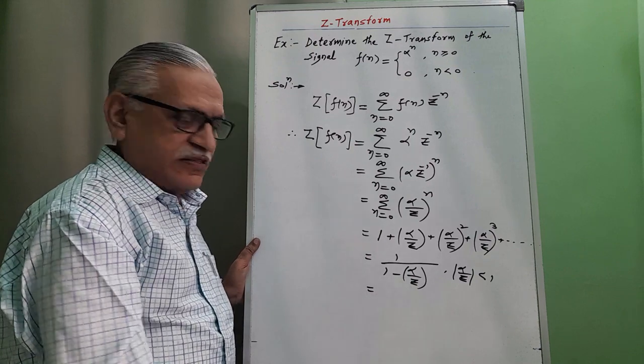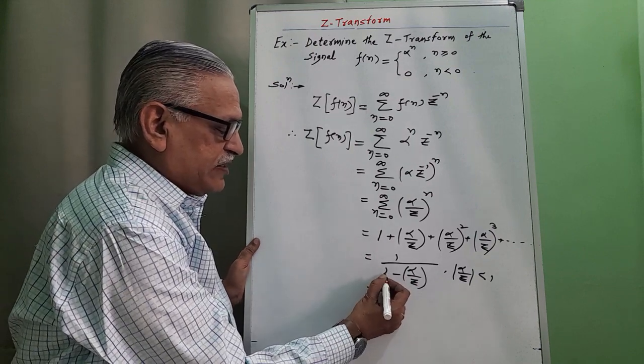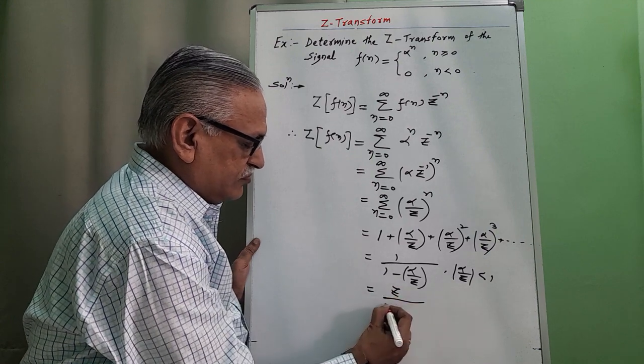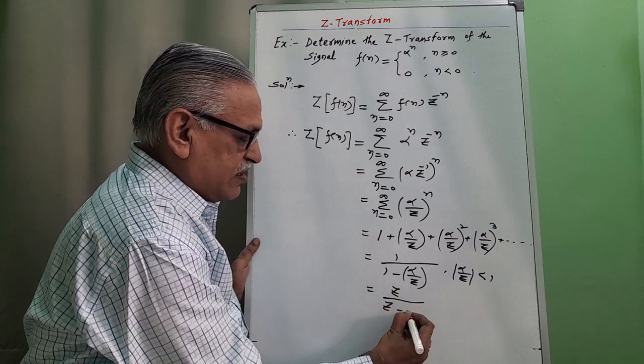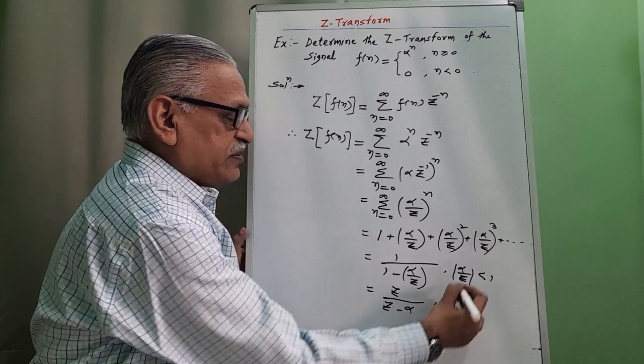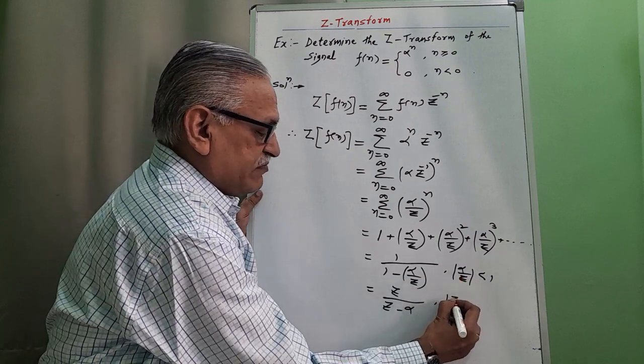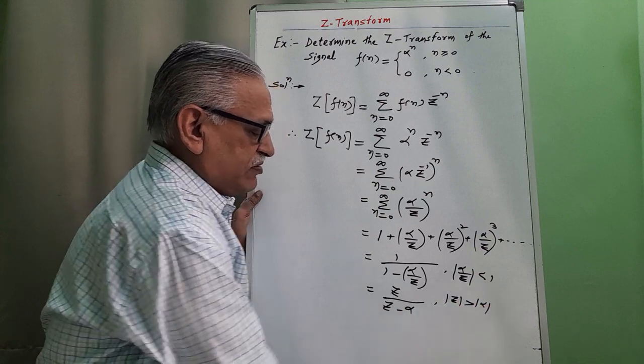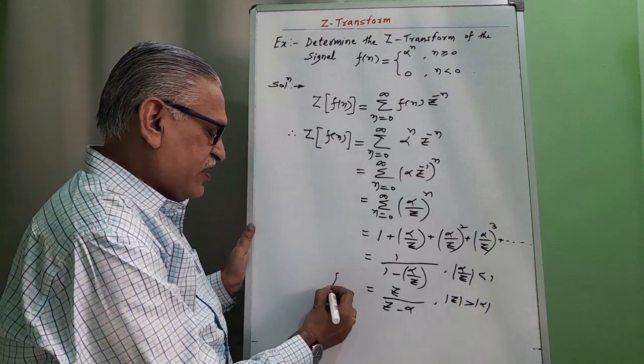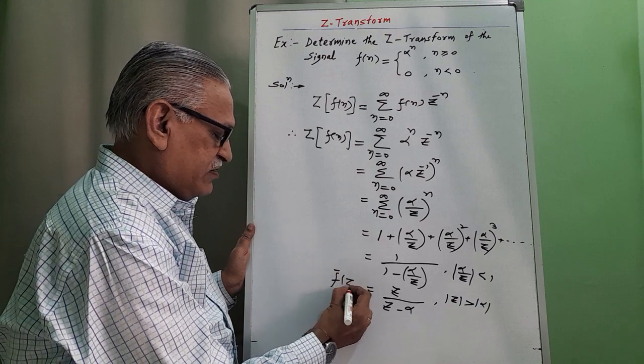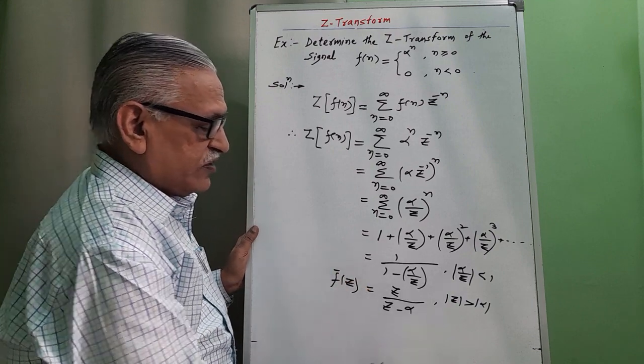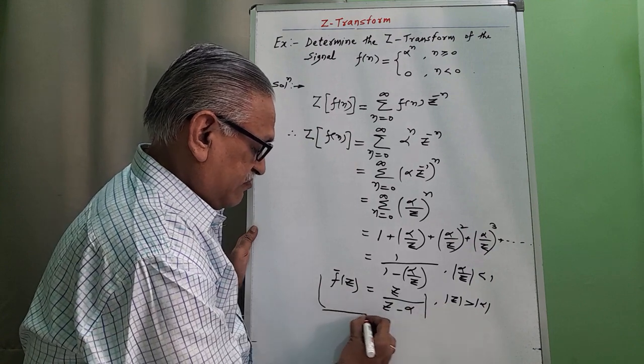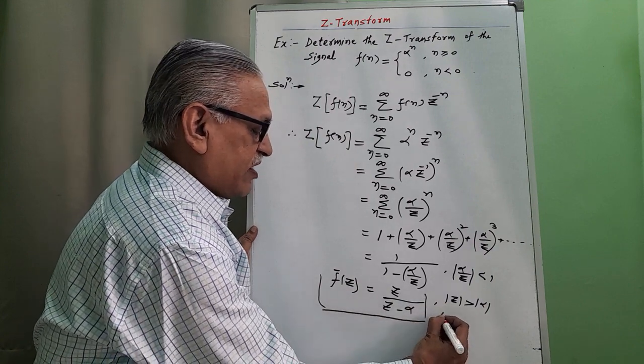Therefore, rewriting it by cross-multiplying, we have Z over Z minus alpha, with the condition mod Z greater than mod of alpha. This is the required Z-transform, or the required answer.